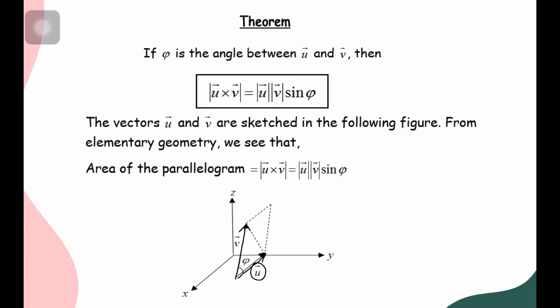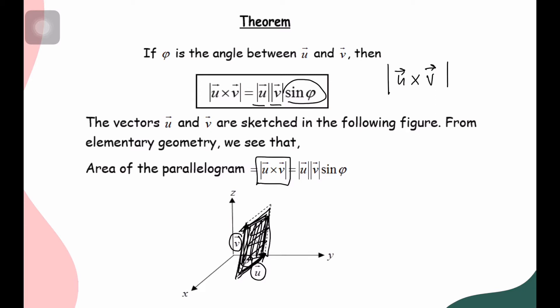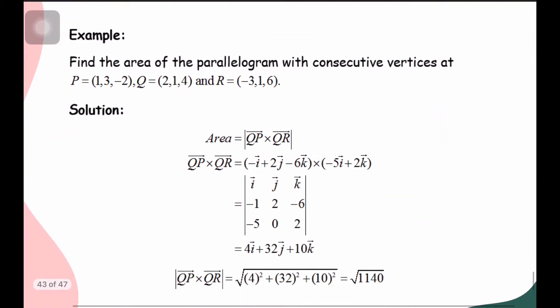The magnitude of u multiplied by the magnitude of v multiplied by sine phi gives the whole area of the parallelogram formed by those two vectors. So we can find the area of a parallelogram by finding the magnitude of u cross v. The magnitude of u cross v equals |u||v|sin(φ), which is the area of the parallelogram formed by vectors u and v.